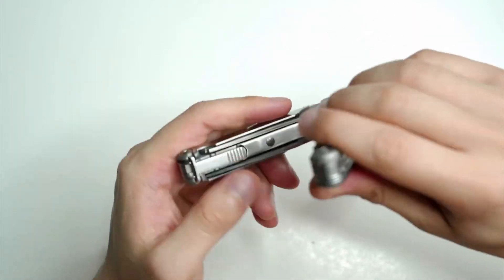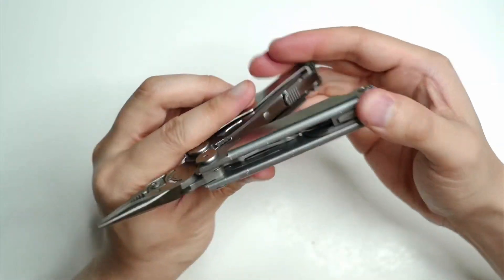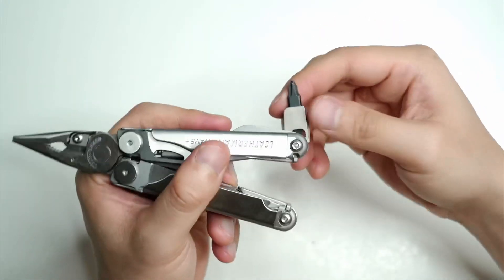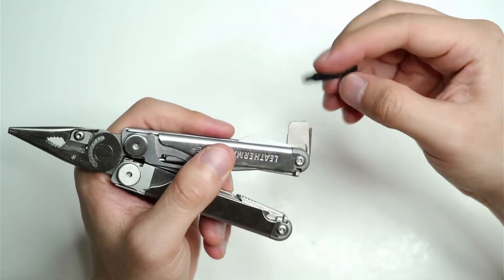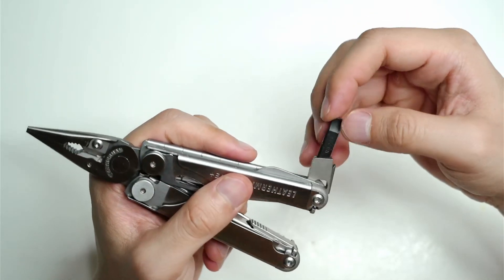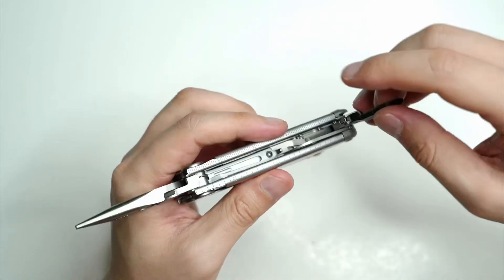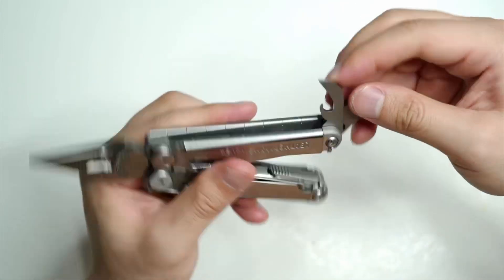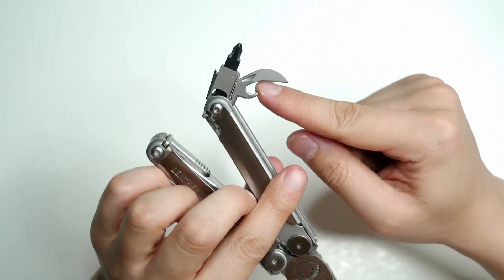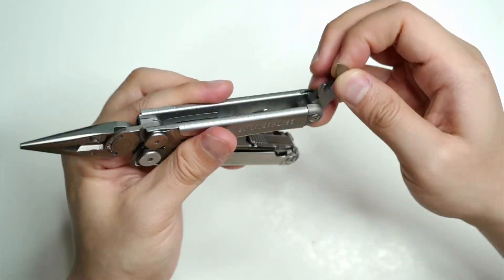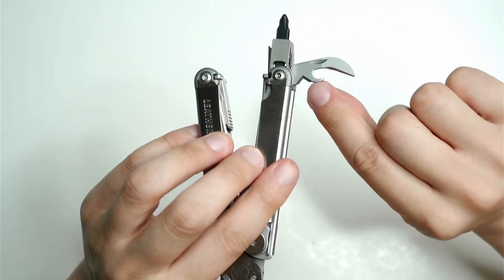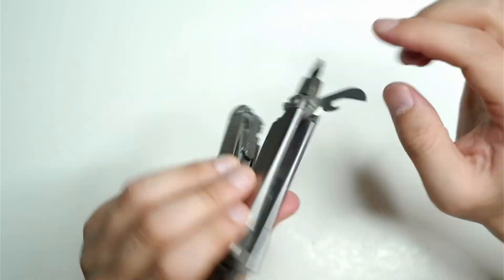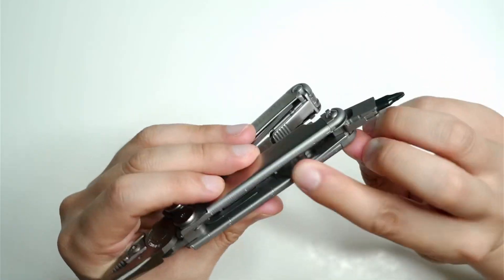So let's look at the other side. So you've got large bit driver and you've got a Phillips head here and flat head screwdriver. And I have found these bits to be really, really durable. And this here is a can opener and a bottle opener at the same time. And there's also a wire stripper right here, this little V shape in there. So really cool.